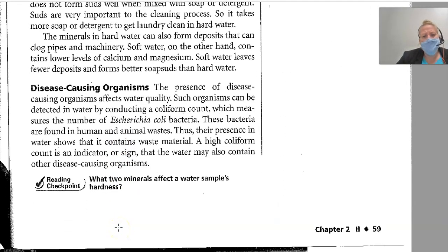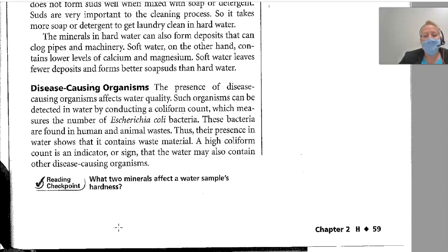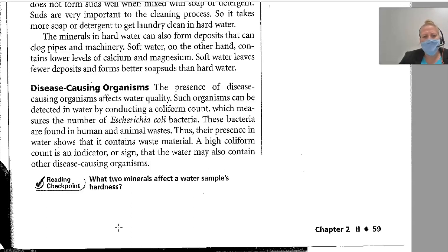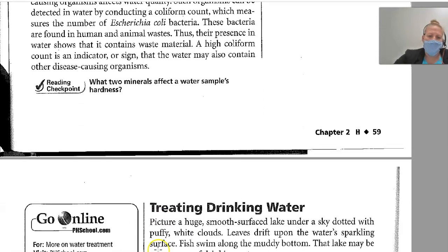Disease-causing organisms. The presence of disease-causing organisms affects water quality. Such organisms can be detected in water by conducting a coliform count, which measures the number of E. coli bacteria. These bacteria are found in human and animal waste; their presence in water shows it contains waste material. A high coliform count is an indicator that the water may also contain other disease-causing organisms.